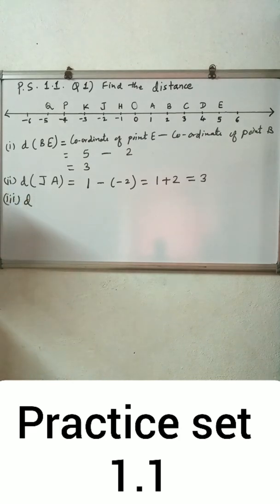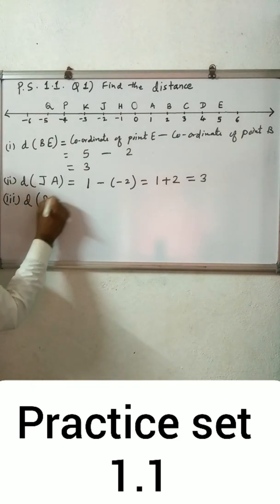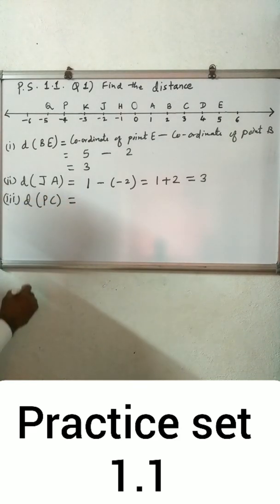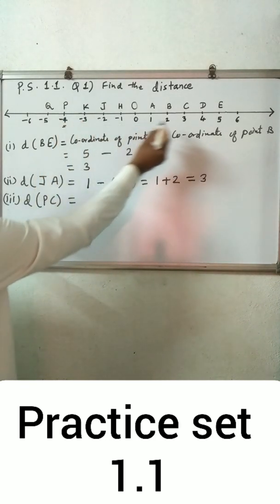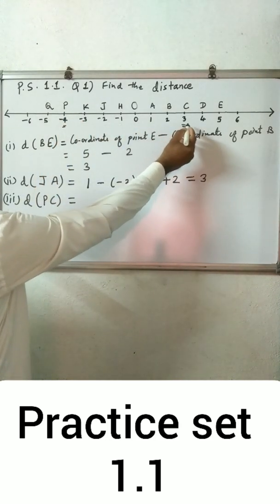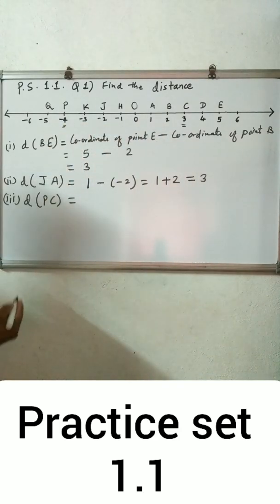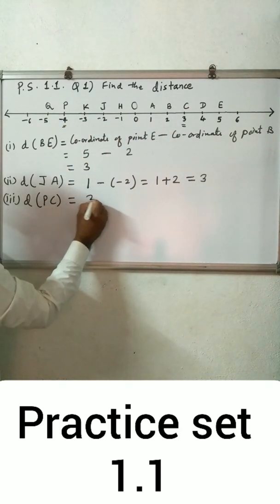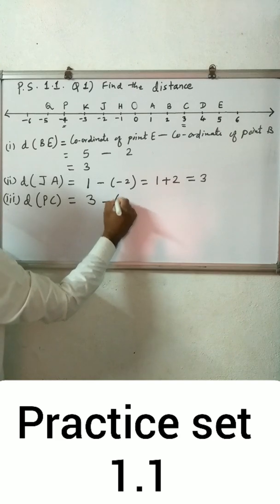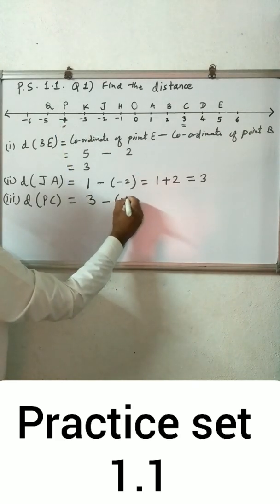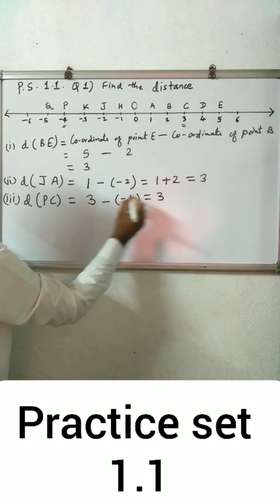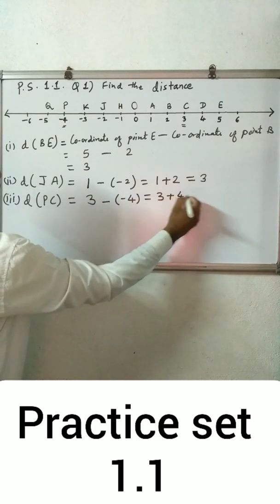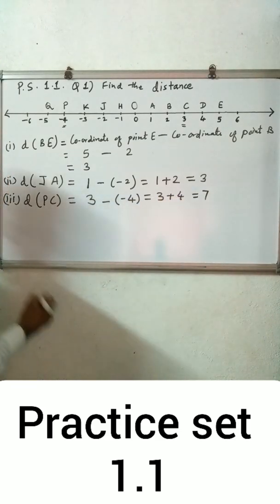Third, distance EC. Coordinate of P is minus 4 and coordinate of C is 3. Since 3 is greater than minus 4, distance EC equals coordinate of C minus coordinate of P: 3 minus (minus 4) = 3 plus 4 = 7.